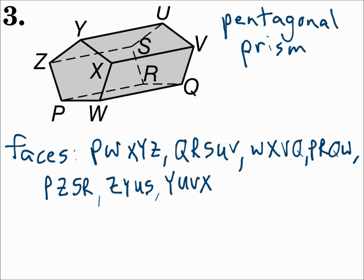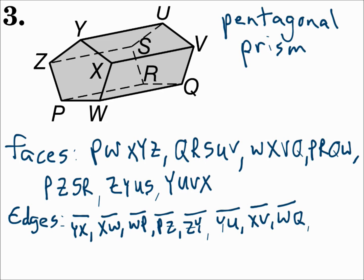You also have edges, which are the segments. There's 15 of those. On the left-hand pentagon, you have segment YX, segment XW, segment WP, segment PZ, and segment ZY. Wrapped around the middle, you have five segments. Segment YU, segment XV, segment WQ, segment PR, and segment ZS.